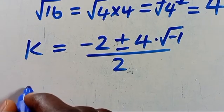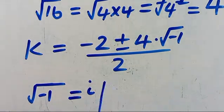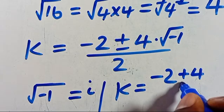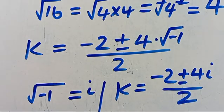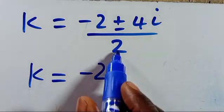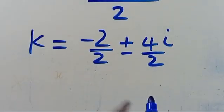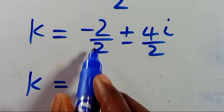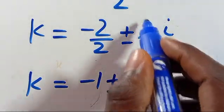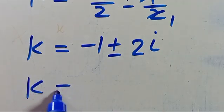So we have k equals minus 2, positive or negative 4 multiplied by root of minus 1, then all divided by 2. We remind you that root of minus 1 equals i in the complex space, so therefore we have k equals minus 2 positive or negative 4i, all divided by 2. Dividing through by 2, we get k equals minus 1 positive or negative 2i, meaning we have this complex solution, and also the real solution k equals 2.